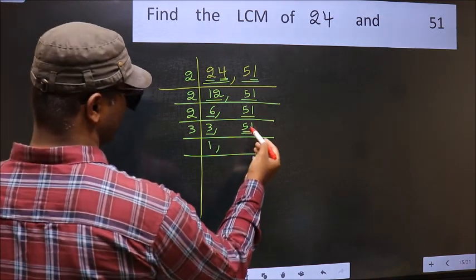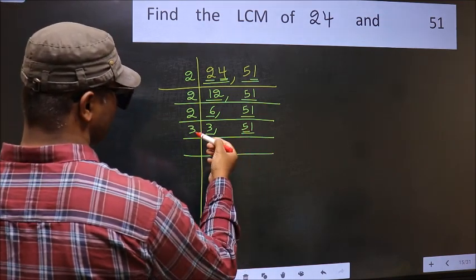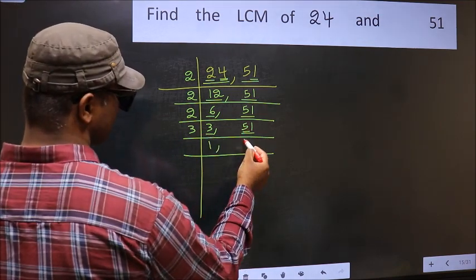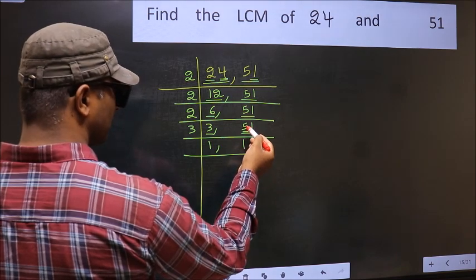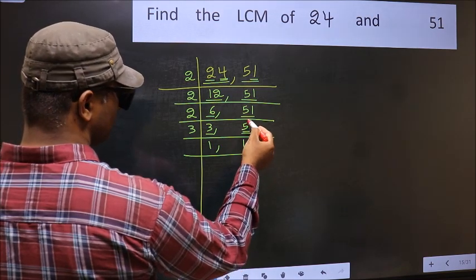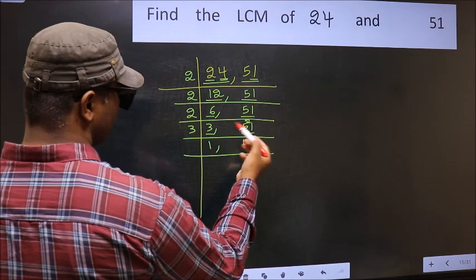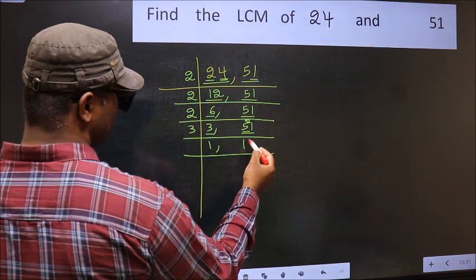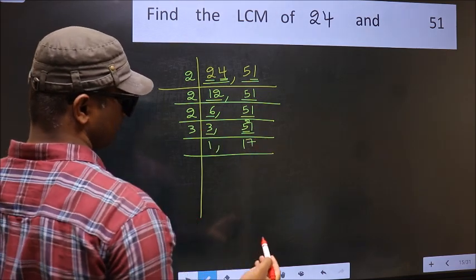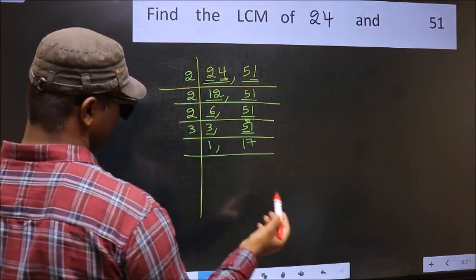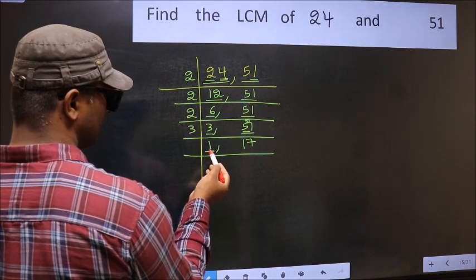First digit 5: a number close to 5 in the 3 table is 3 ones are 3. 5 minus 3 is 2; carry forward to get 21. When do we get 21 in the 3 table? 3 sevens are 21. Now we get 1 here.